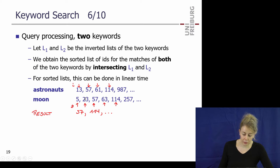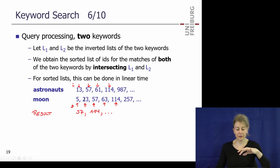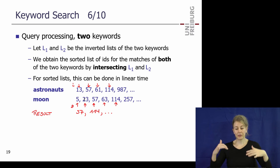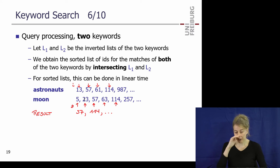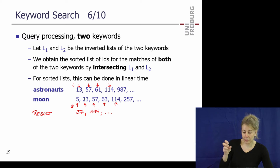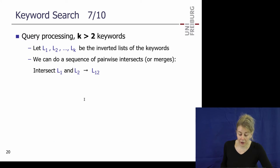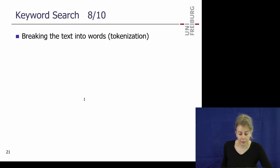For the K-way intersection with a priority queue: you have K pointers, one per list. At each step you find the smallest element among all K current pointers using the priority queue. You throw it out, advance in that list, insert the next element, and repeat. It's not required for the exercise sheet, just in case you want to do it.